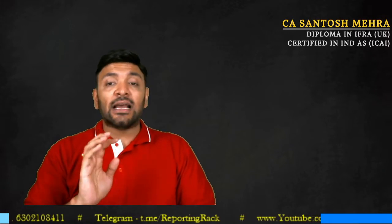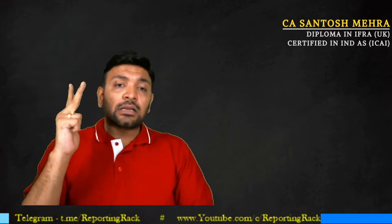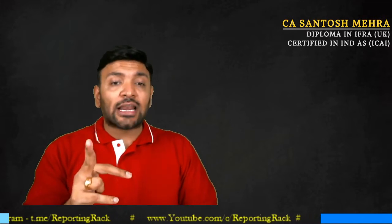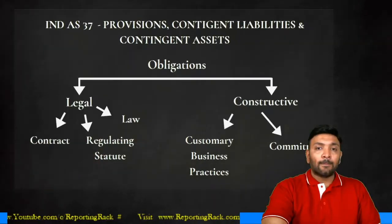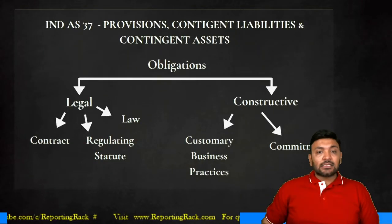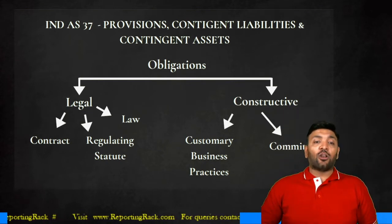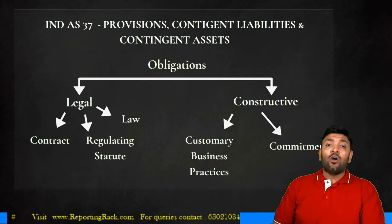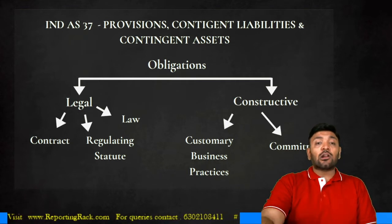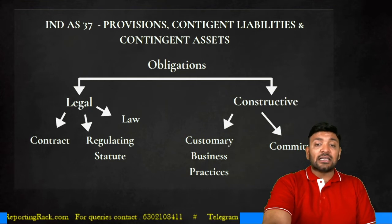So there are three types of obligations which can arise: legal obligation, contractual obligation, and constructive obligation. Legal and contractual obligations arise as per law or a regulating statute, while a constructive obligation is a commitment created through customary business practice. These are the obligations from which provisions, contingent assets, and contingent liabilities emerge.